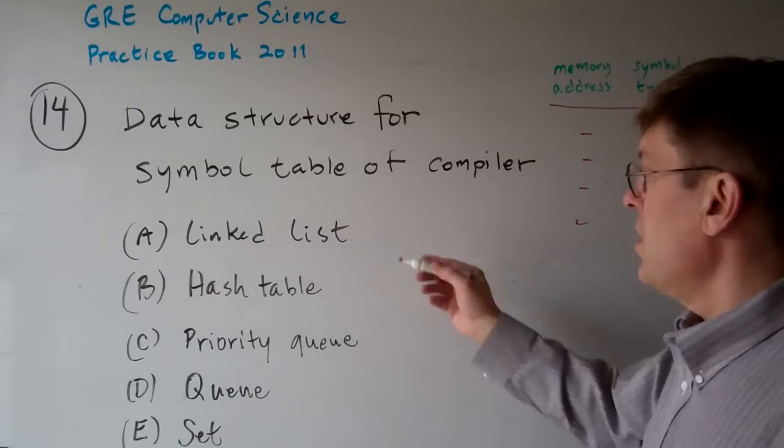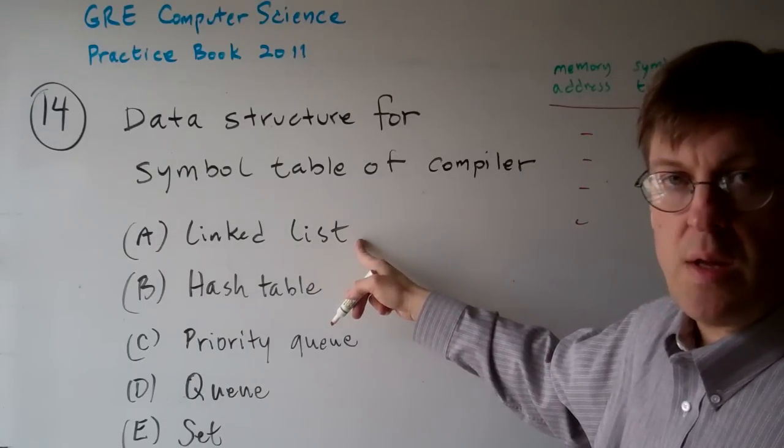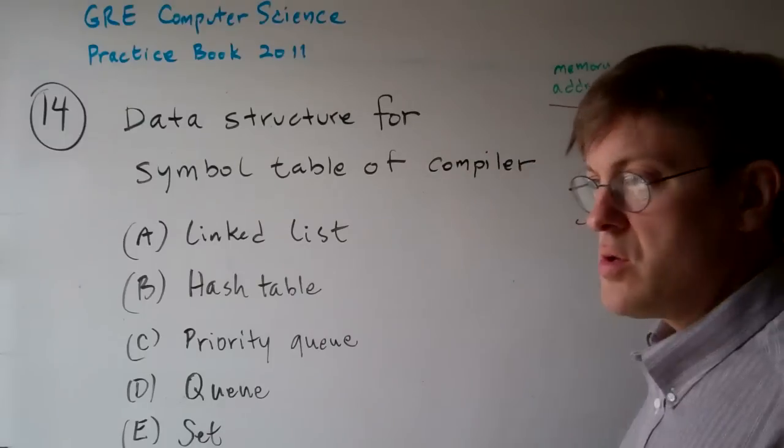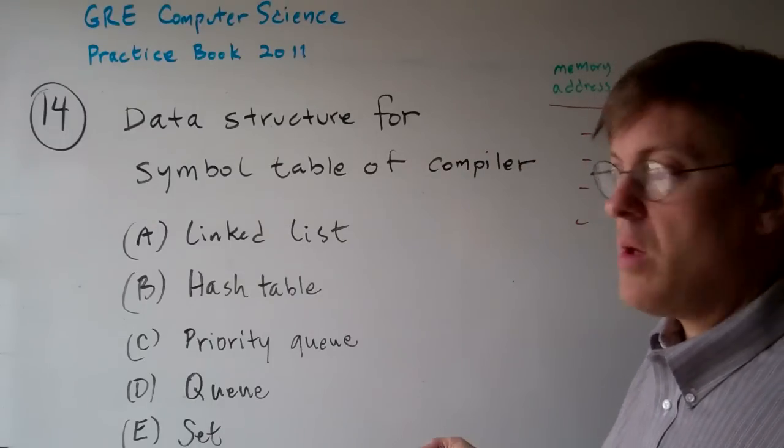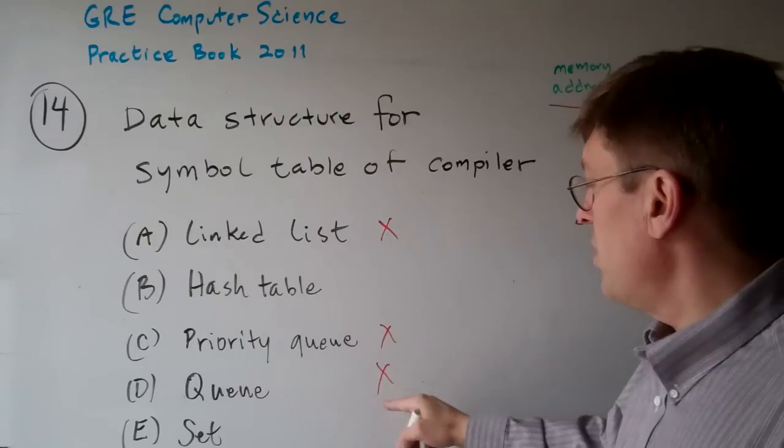You can see that to have it be a linked list would be impossibly complicated. You have to search through the list every time you've encountered a symbol. That's not going to work. A queue is going to run through the same basic problem.